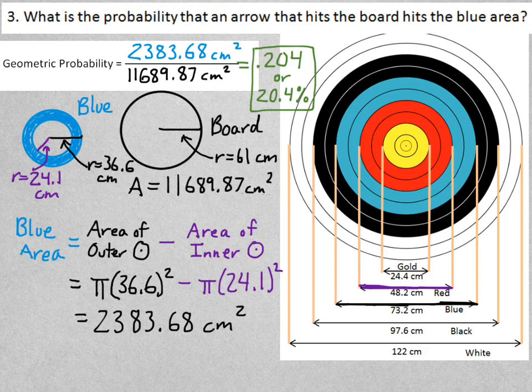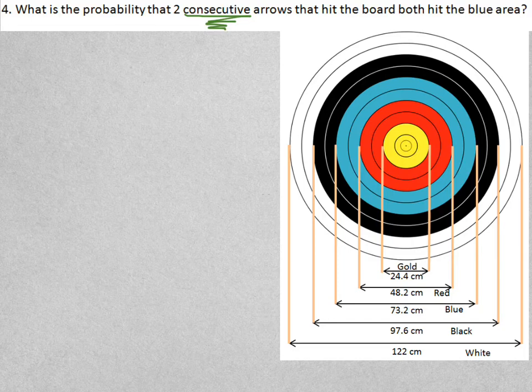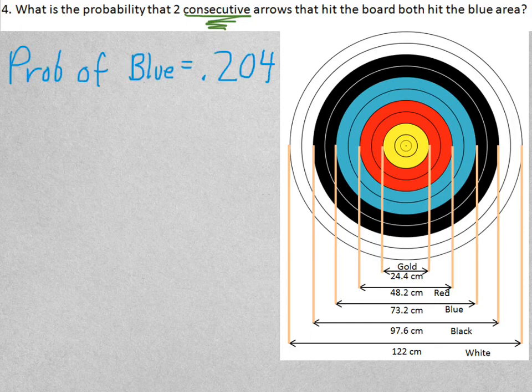Let's make one final observation, and I want to point out one more thing. Let's find the probability that two consecutive arrows hit the board in the blue area. That is, two arrows that he shoots one after the other, and they both hit the blue. So our probability of just hitting the blue once was .204.